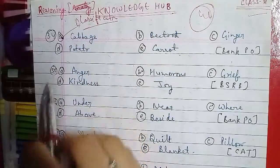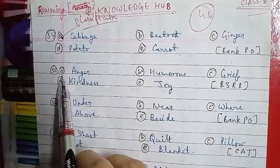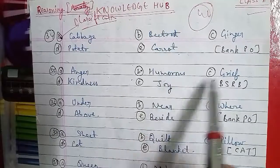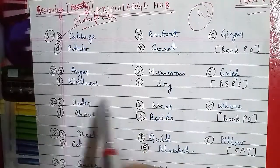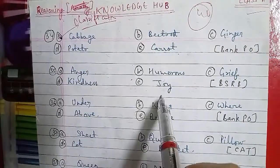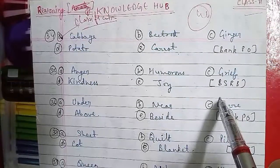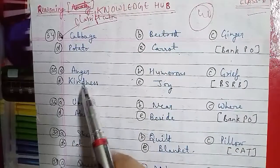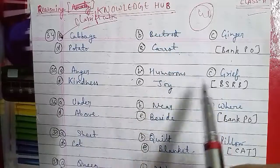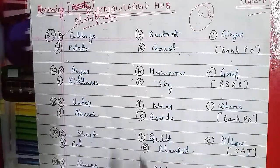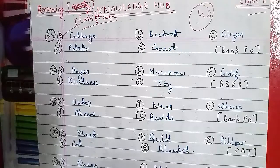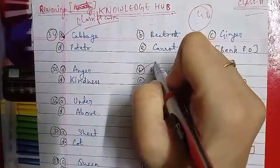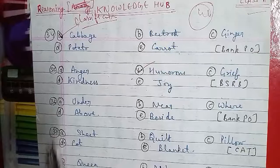Question number 35: Option A is Anger, B is Humorous, C is Grief, D is Kindness, and E is Joy. This was asked in the BSRB question paper. Anger, Grief, Kindness, and Joy are all gestures or mood expressions, but Humorous is not a gesture in the same category. So Humorous is the odd one out.